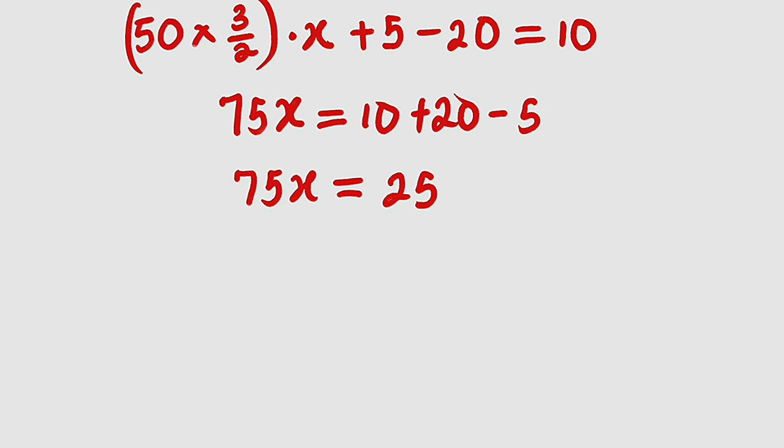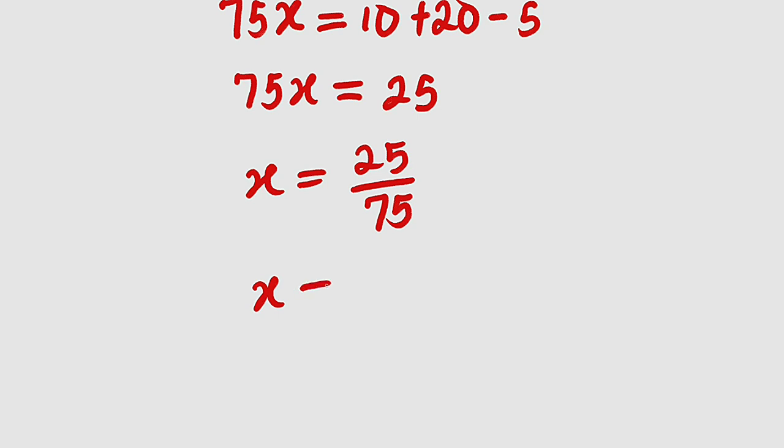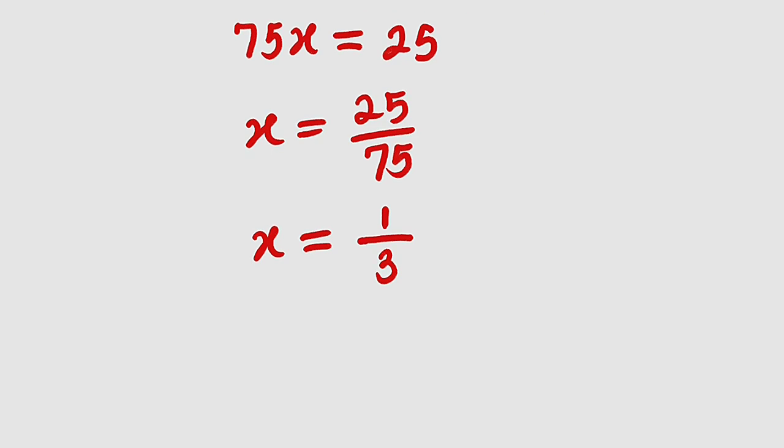So to find the value of x, we are going to divide both sides by 75. And hence, x equals 25 divided by 75. 25 can divide 25 exactly one time, and 25 can divide 75 exactly three times. So the value of x is one third. As simple as that.